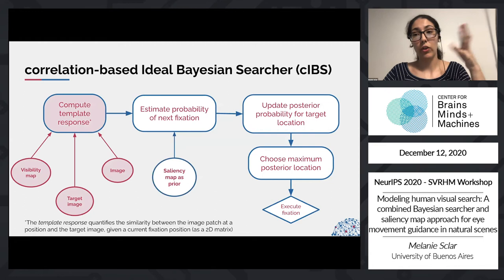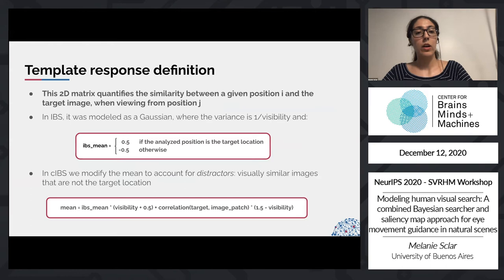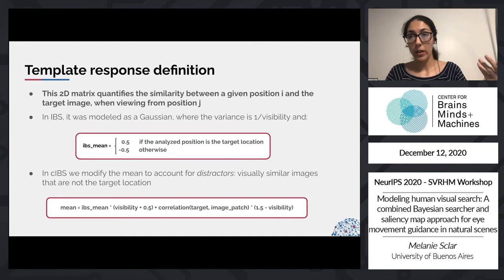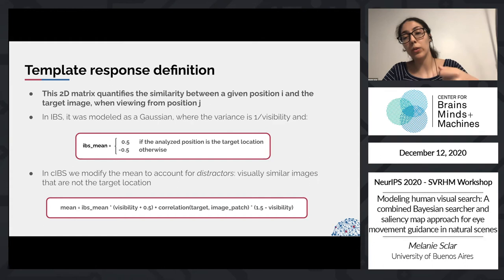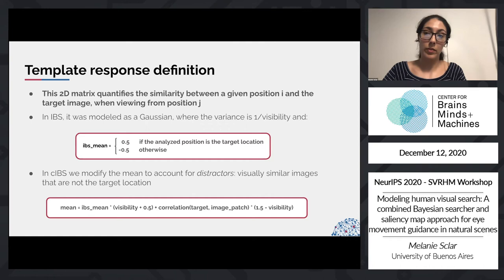We also modified the computation of the template response from the 2005 work. This quantifies the similarity between a given position I and the target image, given that I'm looking at position J. If position I is very far away, visibility is low and we are unsure what we're seeing due to peripheral vision. In IBS, this was modeled as a Gaussian, where the value for each pair I-J was drawn from a Gaussian distribution — a nice feature since running the model twice may yield different scan paths. The variance was set to 1 divided by visibility: high visibility means low variance (sure judgment), and low visibility means high variance (uncertain judgment).